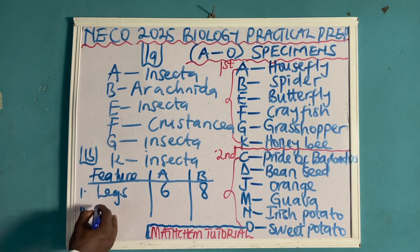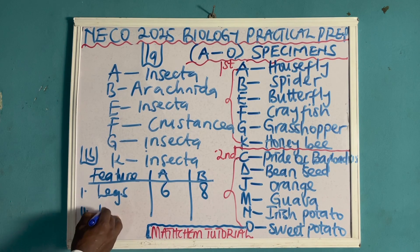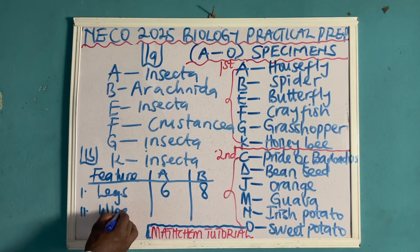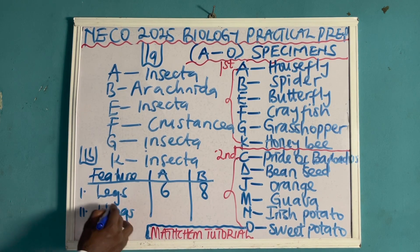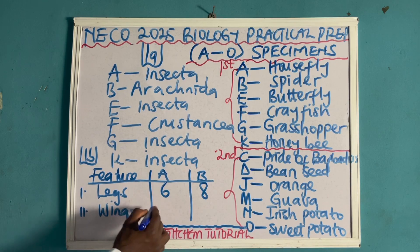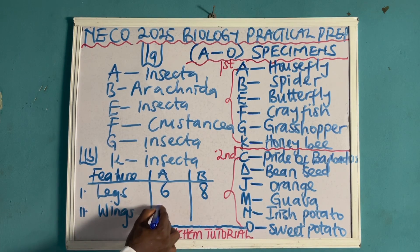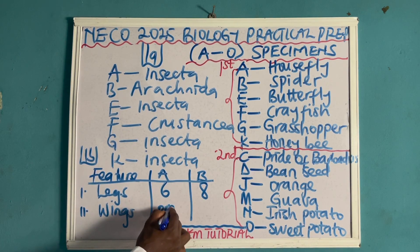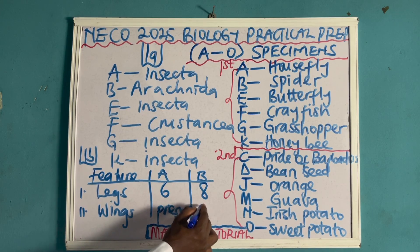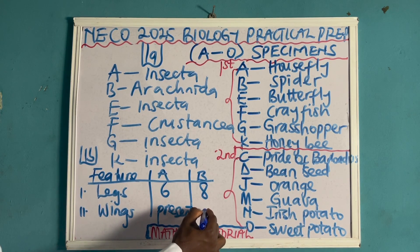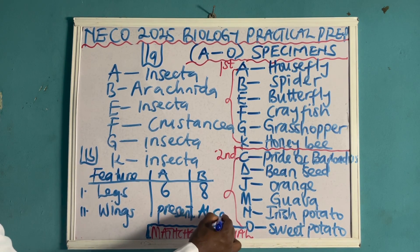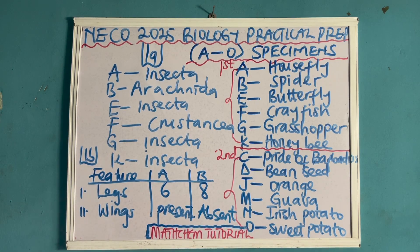Another observable difference is their wings. Specimen A has a presence of wings, while specimen B — that is the spider — has an absence of wings. There are no wings on the spider.